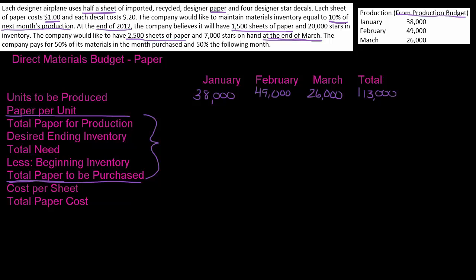Remember, we're going to take our production and convert it into paper. This is how many airplanes we need to make, so now let's convert that to paper. The problem says half a sheet of paper, so that would mean 0.5 units of paper. We're just going to multiply: 38,000 times 0.5 is 19,000; 49,000 times 0.5 is 24,500; 26,000 times 0.5 is 13,000; and 113,000 times 0.5 is 56,500. So from here on we're going to be talking about paper, not airplanes.